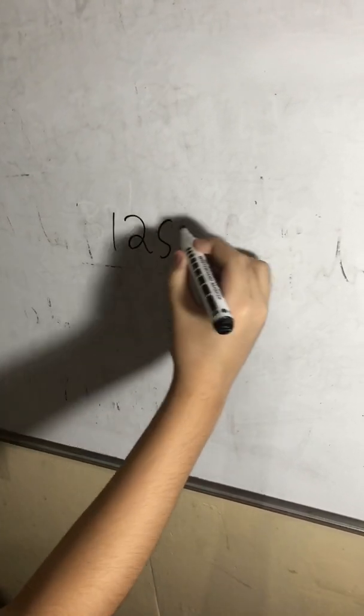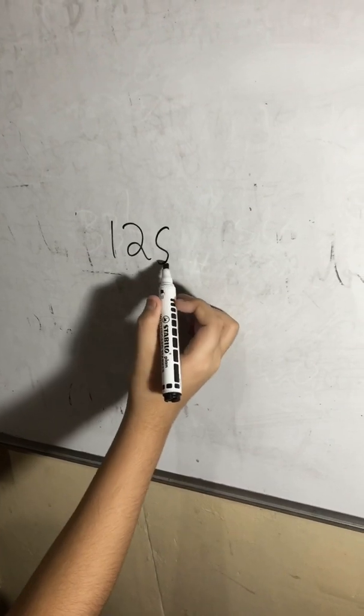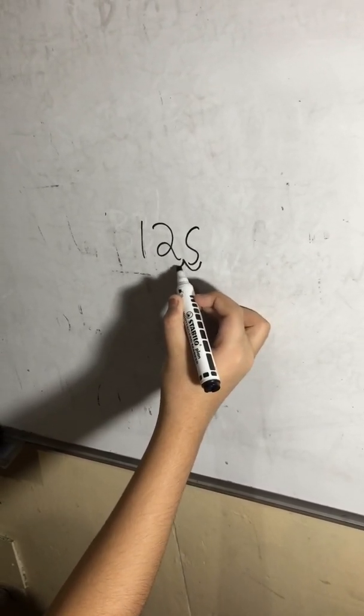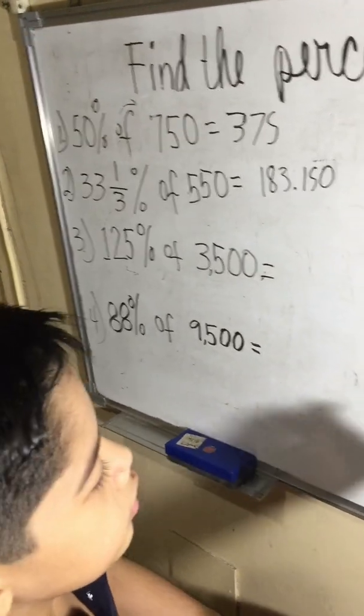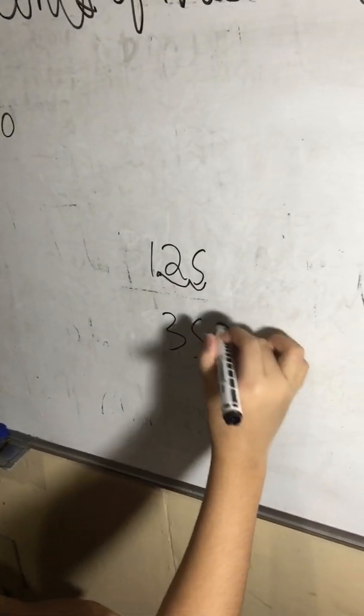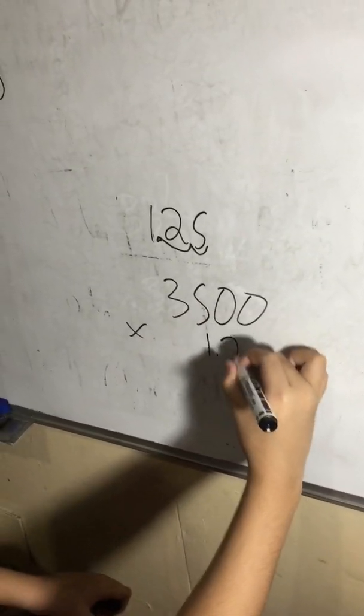To make this into a decimal to multiply, we need to remove the percent sign here. And we move the decimal point two places to the left. So 1.25 times 3500. So 3500 times 1.25.